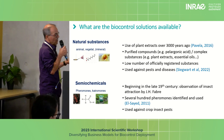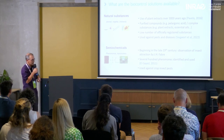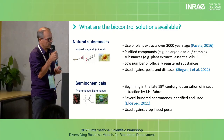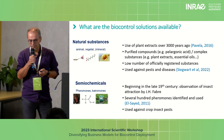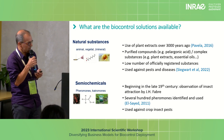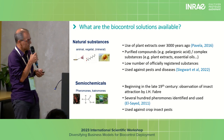Finally, semi-chemicals. We can consider semi-chemicals as an augmentative solution, because the idea is to deploy the chemicals every year in the growing crop. The history of semi-chemicals began in the late 19th century with the observation of insect attraction by Jean-Henri Fabre, and at present there are several hundred pheromones identified and used against crop insect pests.